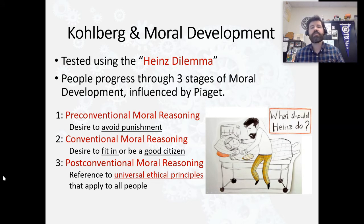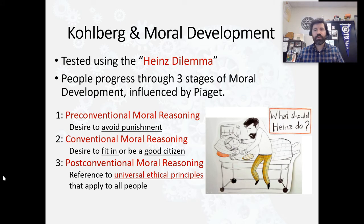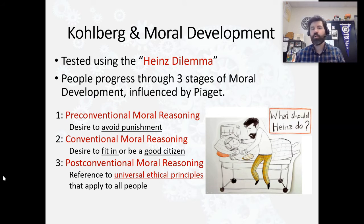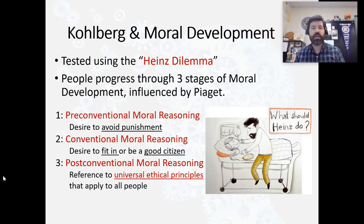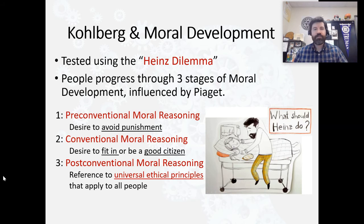In the conventional moral reasoning stage, we base our morals not on avoiding punishment but on being a good citizen — doing what is right by doing what we believe society thinks we should do. Many people would say morals are based on the laws of the land — if you break a law, it's immoral. Or perhaps morals are based on the laws of one's religion. Whether the law is created by legislation or by a deity, you're trying to fit in and do what's right. That's conventional moral reasoning.